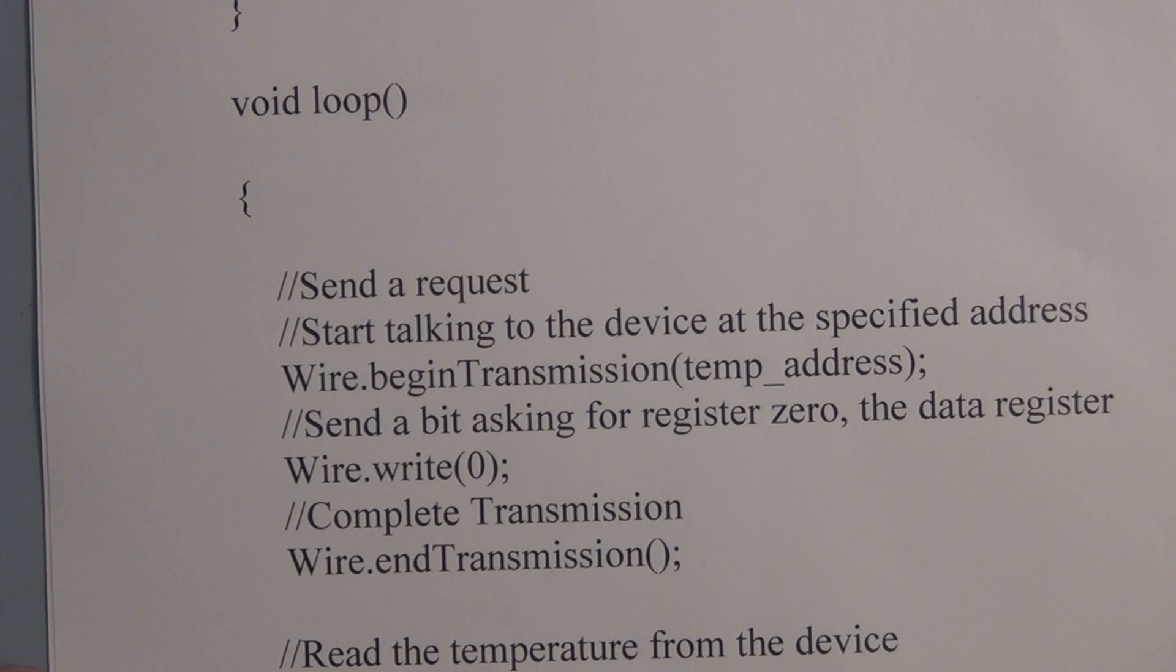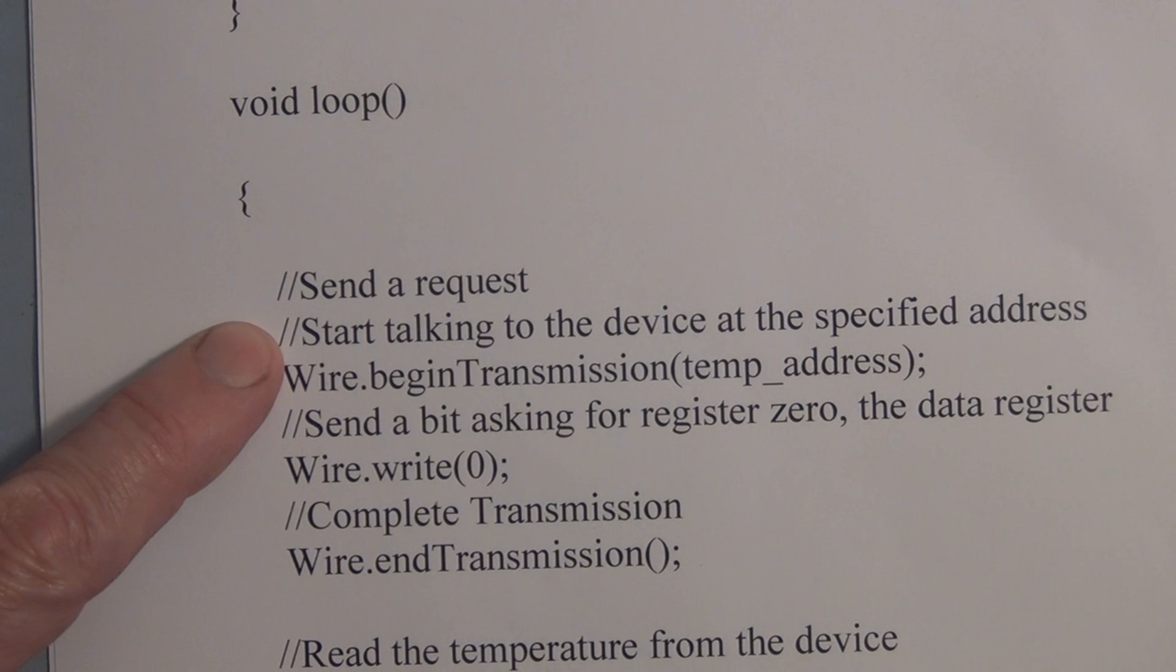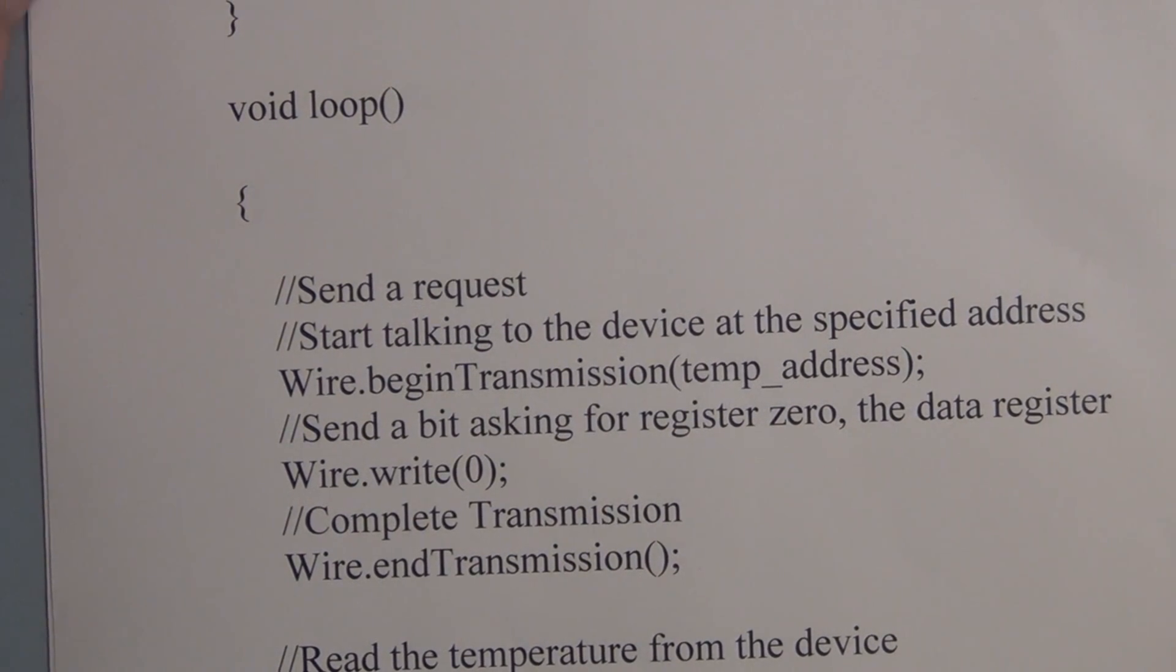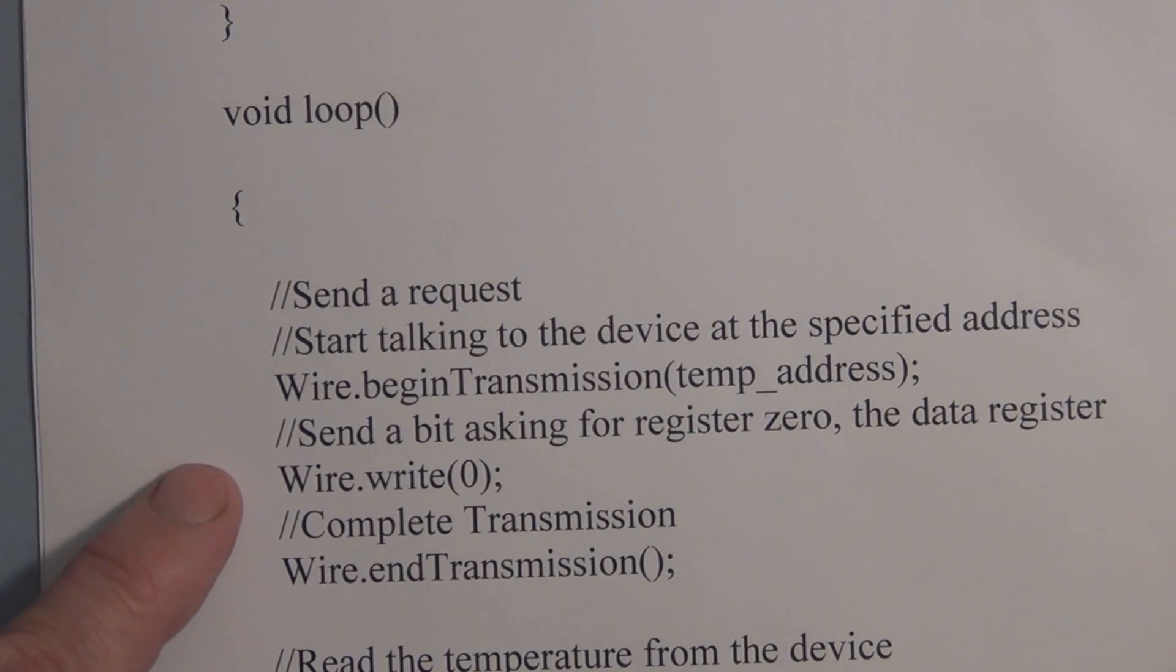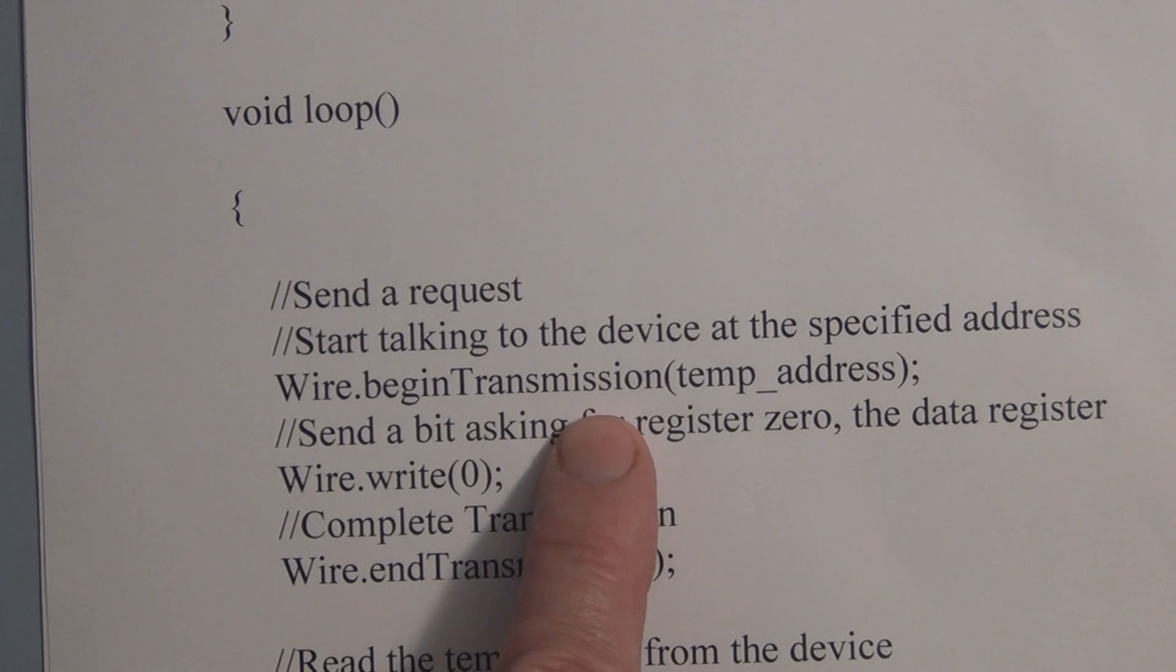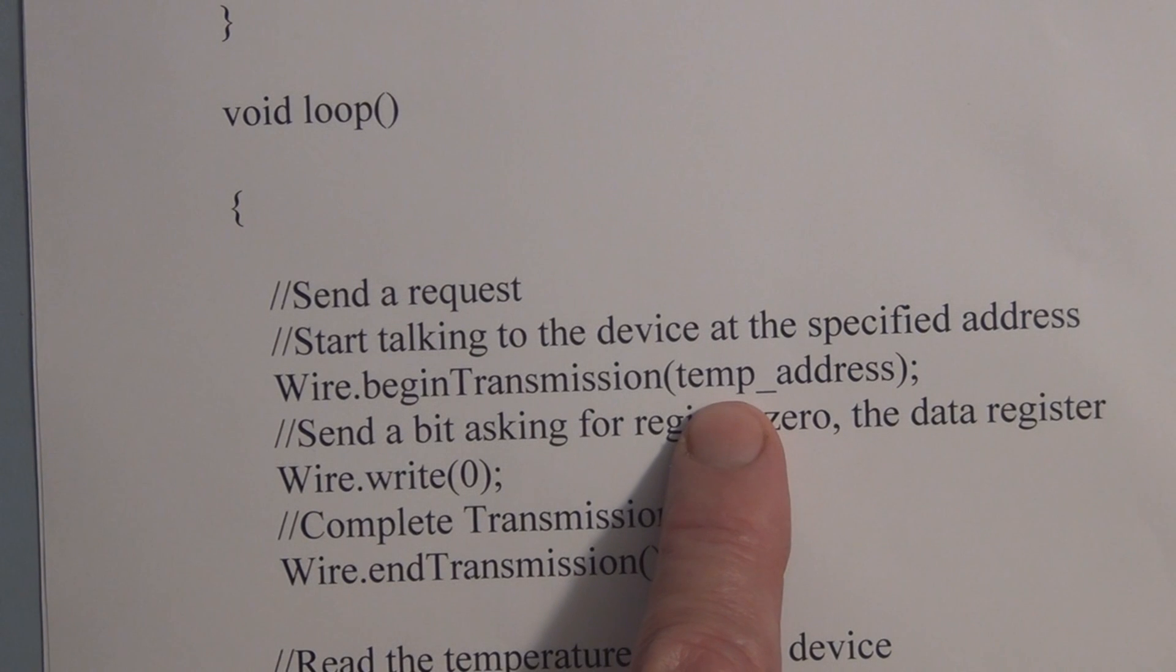Now, remember, we have to request or we have to send a start bit to start transmitting or communicating with the slave. So when we include the wire dot h library, the functions available for the I2C communication are available. So here we have a wire dot begin transmission. And this is saying that we want to start talking to the slave that's at address 72 or the 72 that's been assigned to temp address.